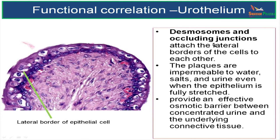This is also one characteristic feature of the cells of the transitional epithelium. What is the importance of the plaques? They are impermeable to water, salts, and urine, even when the epithelium is fully stretched. When the bladder is distended with urine, the plaques are impermeable to water, salts, and urine — providing an effective osmotic barrier between the concentrated urine inside the bladder and the underlying connective tissue. The transitional epithelium, or urothelium, is therefore waterproof and impermeable to the contents within the urinary bladder.